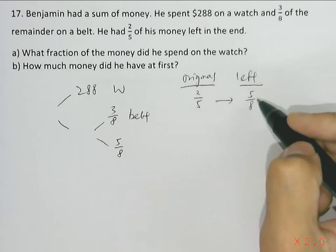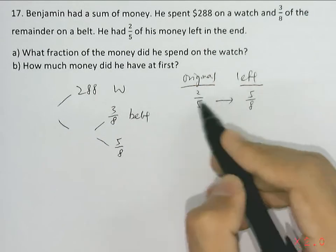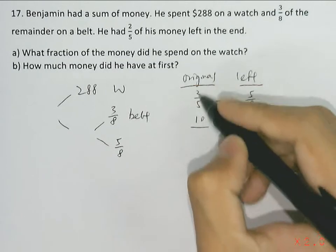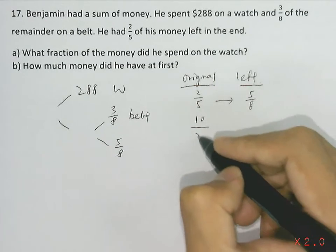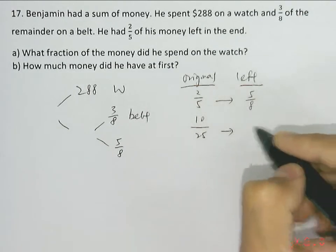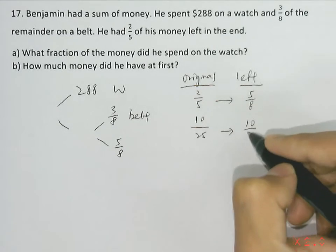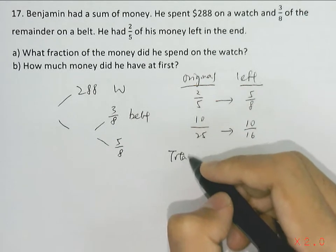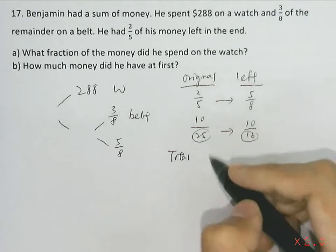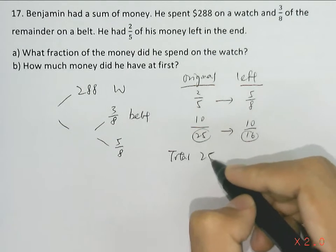We can match the numerators 2 and 5—we'll match it into 10. From here we will have 10/25 of the original amount is equal to 10/16 of the amount left. So we can see from the denominator that in total there were 25 units of money at first.